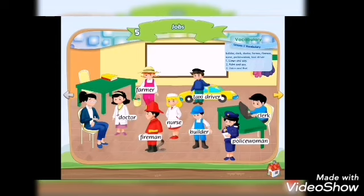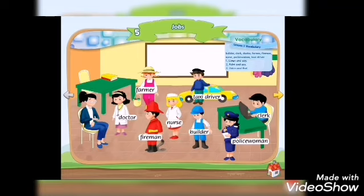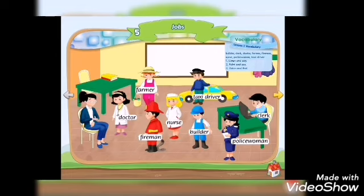Unit 5: Jobs. Farmer. Fireman. Doctor. Nurse. Taxi driver. Builder. Policewoman. Clerk.